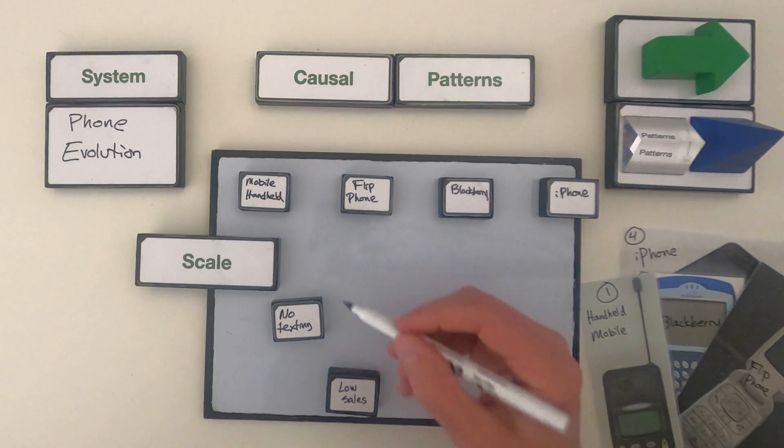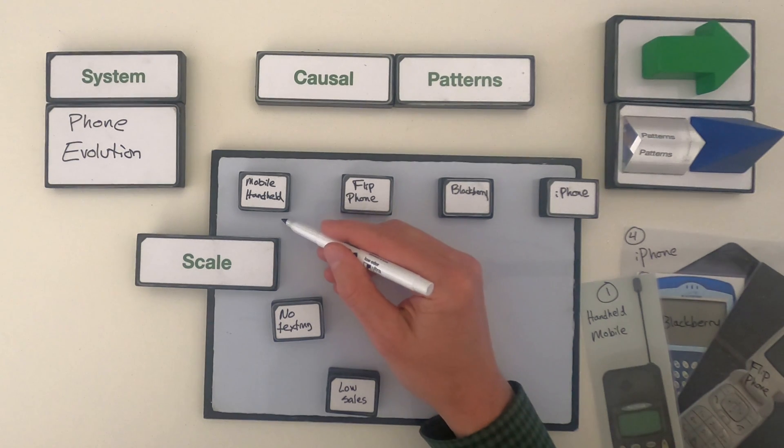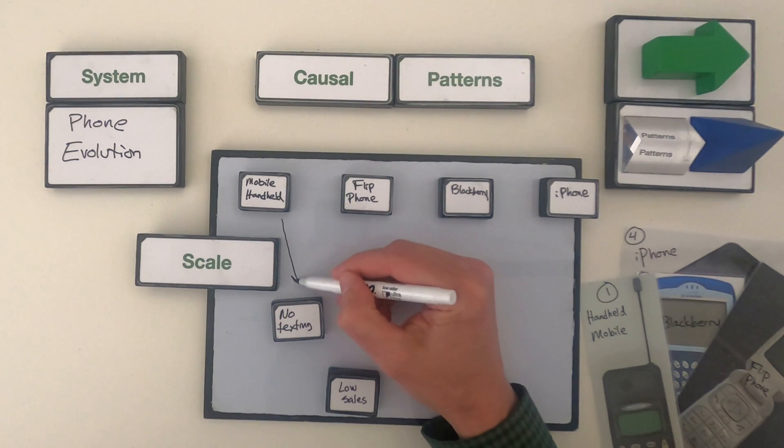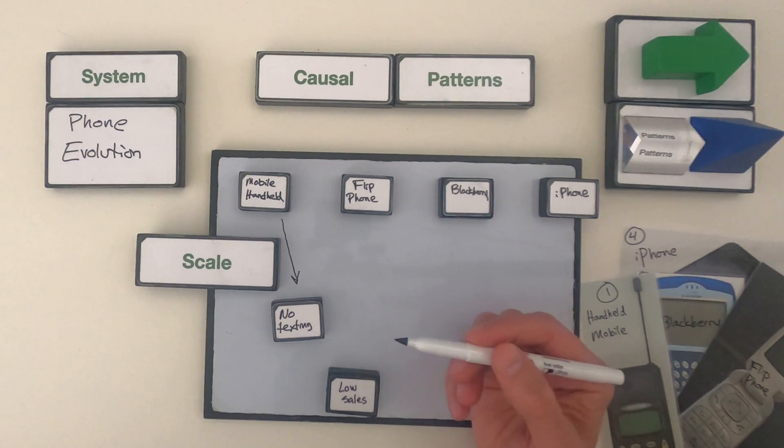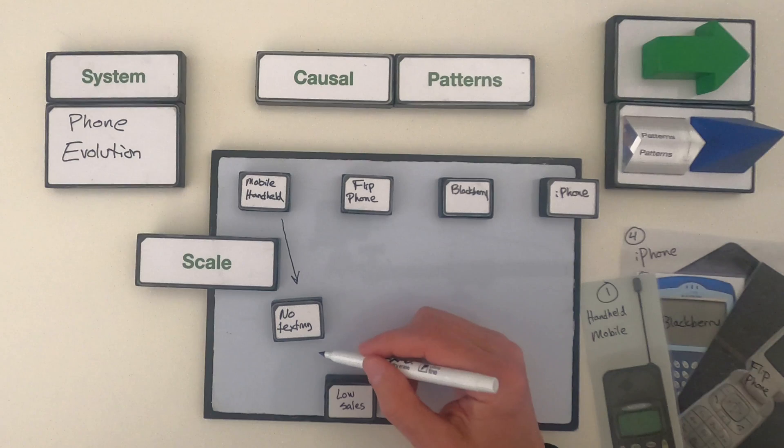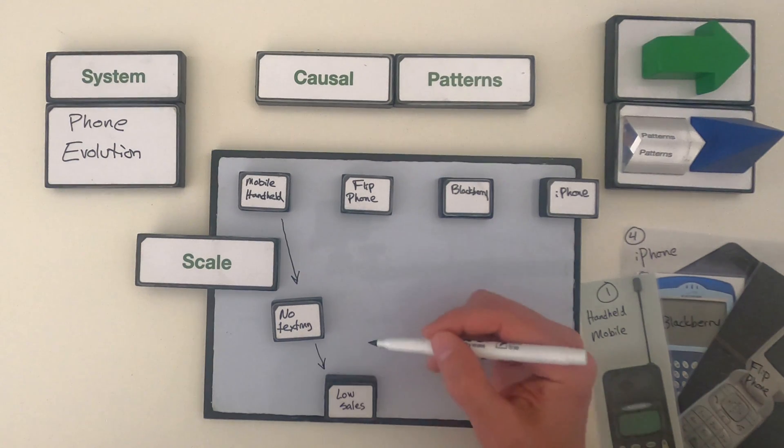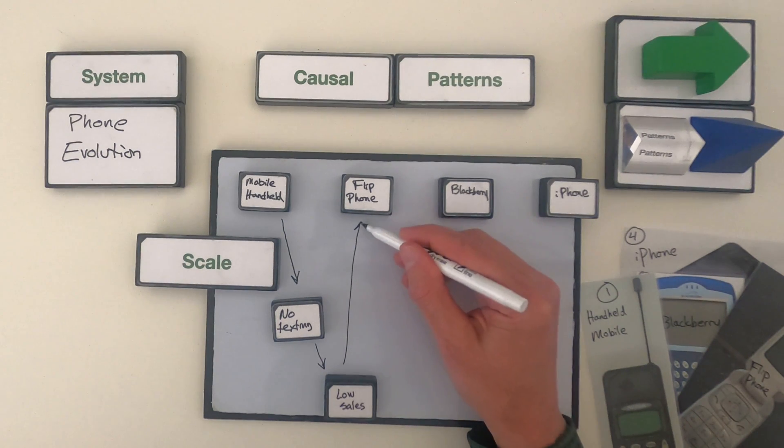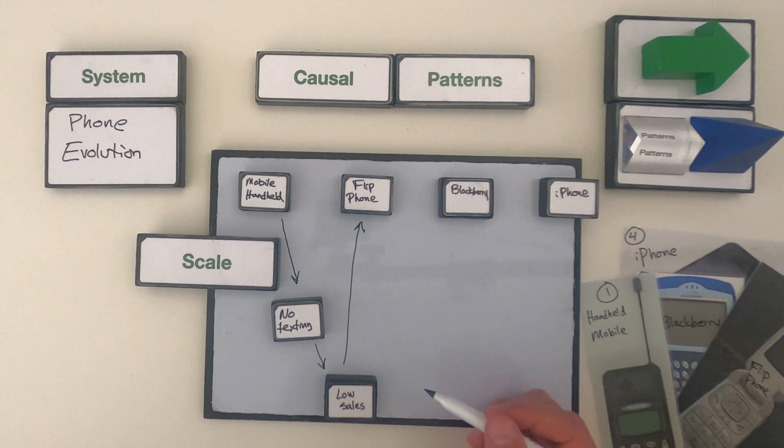Okay, one thing that was important over time is the ability to text people. But these early mobile handhelds, you couldn't text each other. You could just use a phone call. And so as a result, there was competition between these phones. There were low sales of the mobile handheld, which then showed higher sales of the flip phone.